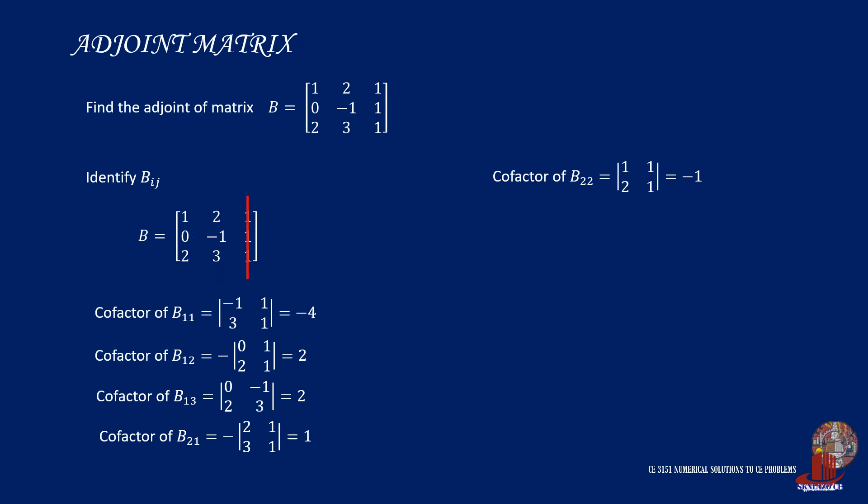The cofactor of B23 will use the negative sign of the determinant with elements 1, 2, 2, and 3. By getting the determinant, the value will be positive 1.